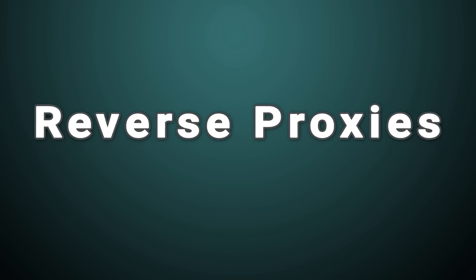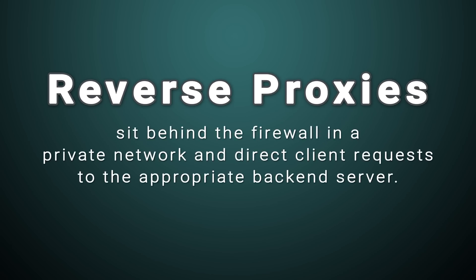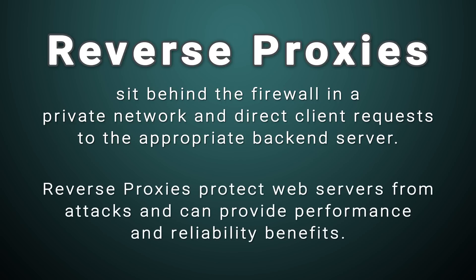Reverse proxies can be used to manage traffic between multiple clients and backend servers. They typically receive requests from clients and then route them to different backend services based on specific rules or conditions. Reverse proxies can be used to improve the availability, scalability, and security of web applications. By distributing traffic among different backend servers, reverse proxies can help balance the traffic load and prevent any single server from becoming overloaded.